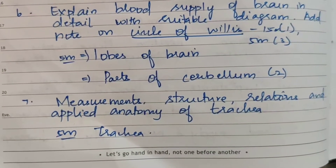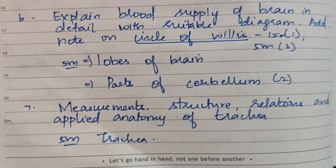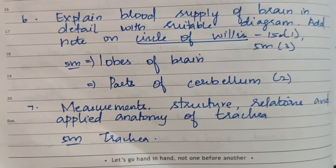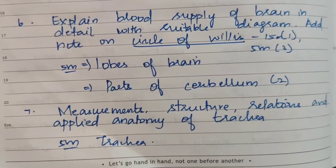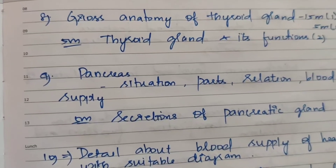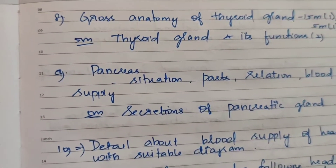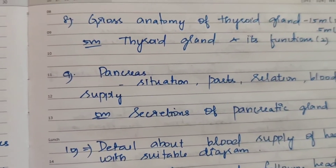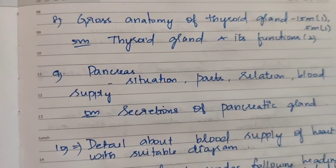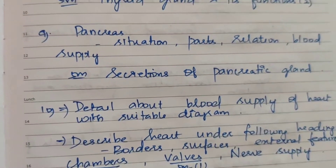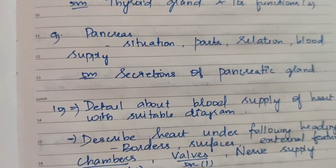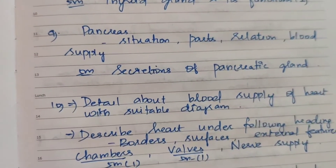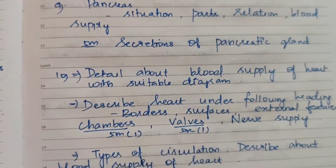The 7th topic: measurement, structure, relation, and applied anatomy of the trachea — for 5 marks and 15 marks.